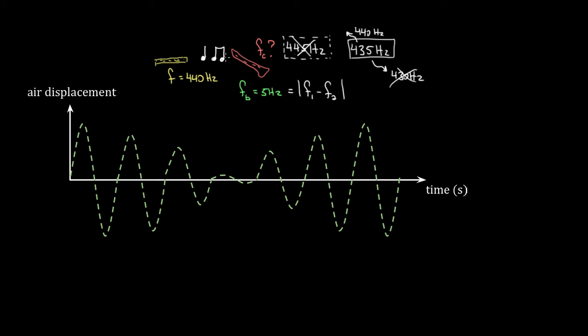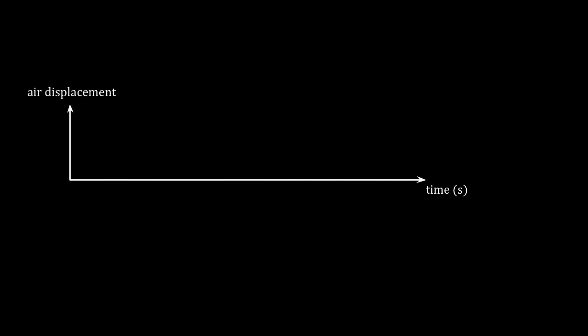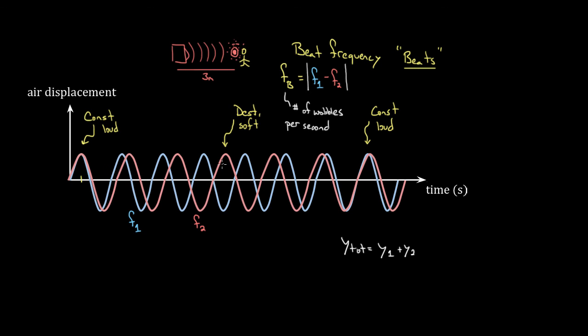So recapping beats, or beat frequency, occurs when you overlap two waves that have different frequencies. This causes the waves to go from being constructive to destructive to constructive over and over, which we perceive as a wobble in the loudness of the sound. And the way you can find the beat frequency is by taking the difference of the two frequencies of the waves that are overlapping.